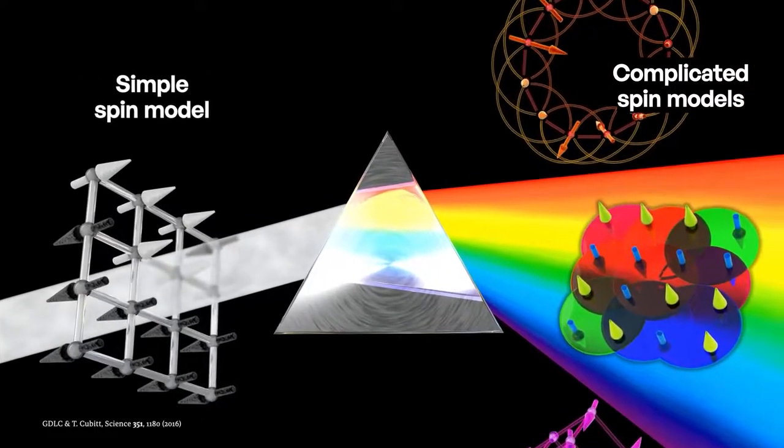Now, this is a homage to Pink Floyd, of course. But so we see that this simple and innocent-looking spin model on the left can, in fact, explore all complexity of spin models. And this is not only relevant for physics, but for all areas using spin models, and they are very popular as toy models of complex systems. So, for example, they are used in artificial neural networks.